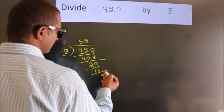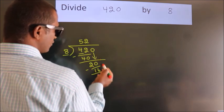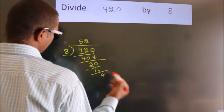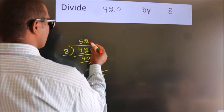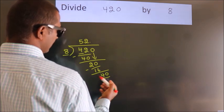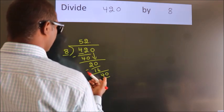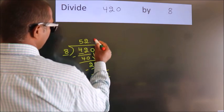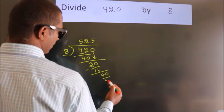After this, no more numbers to bring down. So what we do is we put a dot, take 0. So 40. When do we get 40 in the 8 table? 8 fives 40.